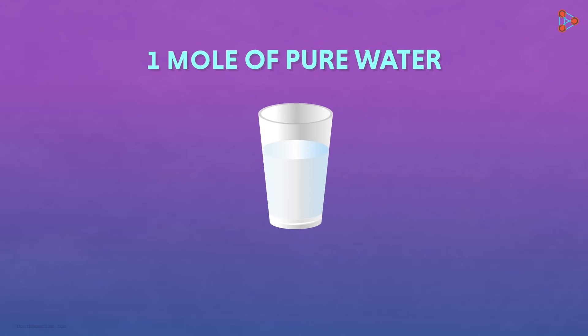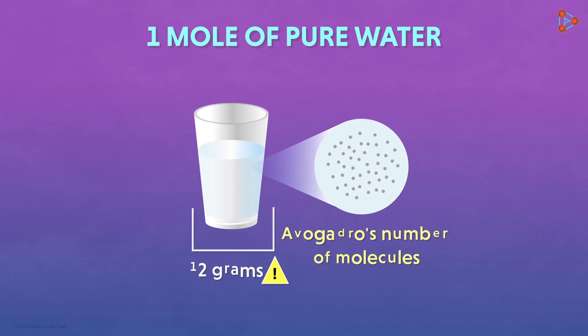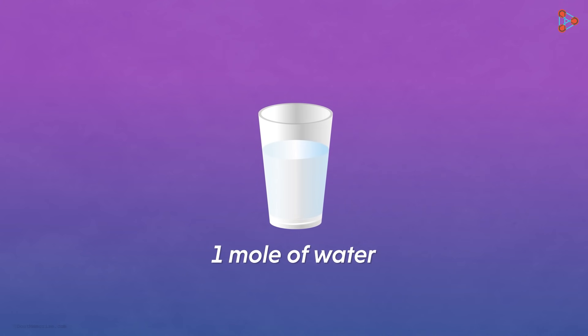Similarly, 1 mole of water will have the Avogadro's number of molecules, but it will not weigh 12 grams. So if we take 1 mole of water and find its mass, we get the answer as 18.015 grams of water. And I'm sure you know why.